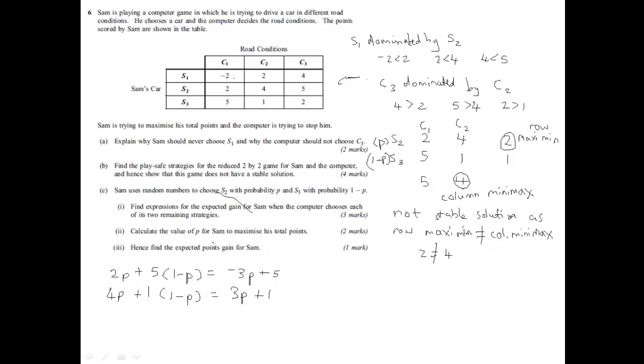For II, it says calculate the value of P. Well, you might want to draw a little graph here. If you just sketch it, just so we can see what's going on. Now, we've got P on this axis and V on this axis. P goes between 1 and 0.